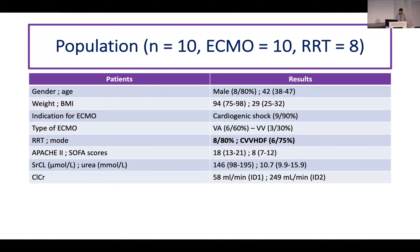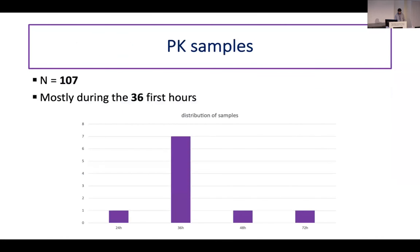The population is a typical ICU population, mainly cardiogenic shock. Not all patients were under renal replacement therapy — only eight of them. Two patients didn't receive renal replacement therapy, and this will influence our model construction. We had 107 samples total, which is quite high, but most samples were taken during the first 36 hours. We have few data after 48 hours, and this will influence the model construction and results.